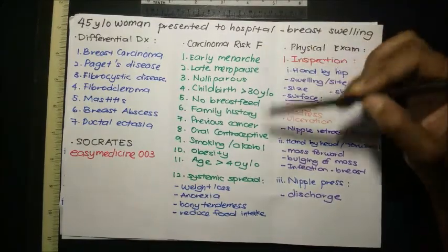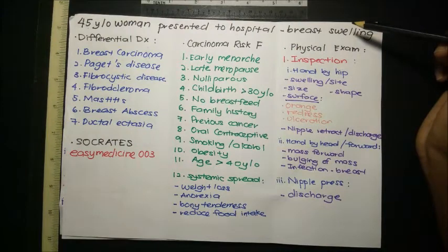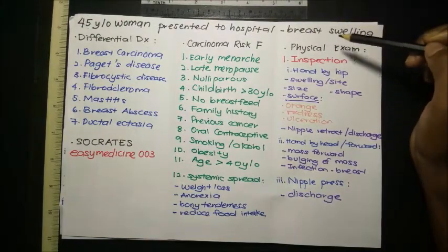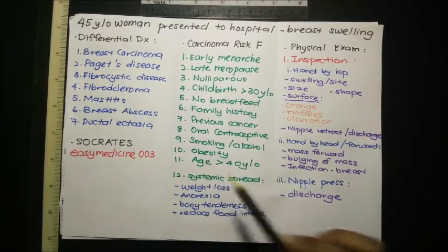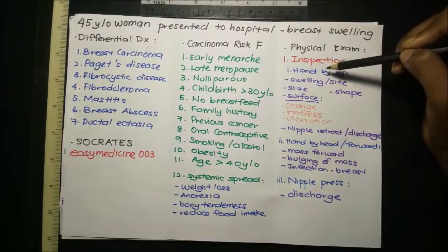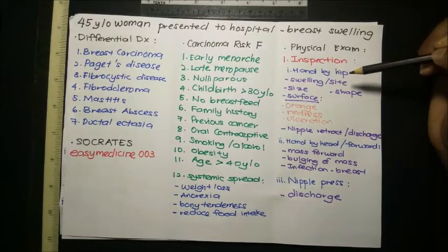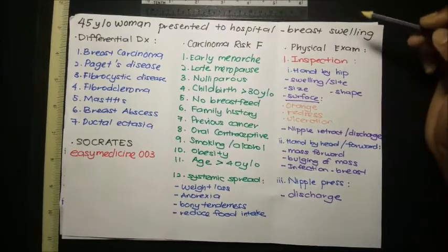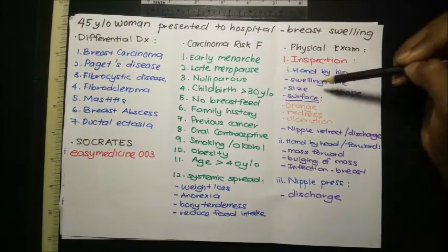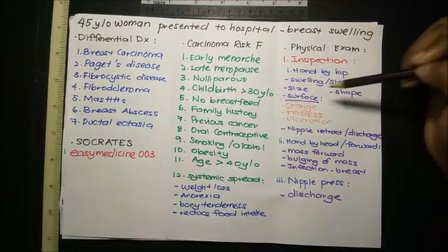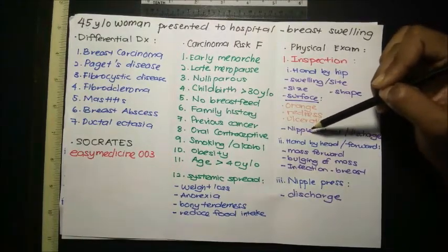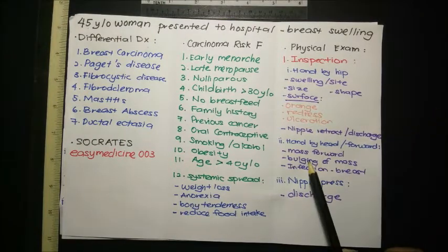Moving on to physical examination. We first check height and weight for obesity. For inspection, ask the patient to hold their hands by their hips so we can see the entire breast without obstruction. We note the site, size, shape, and surface of the swelling — check for peau d'orange, redness, or ulceration — and look for nipple retraction or any visible discharge.